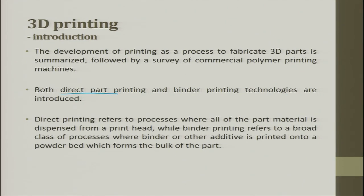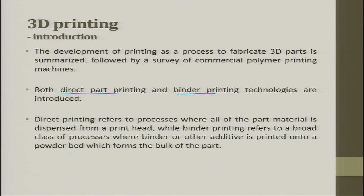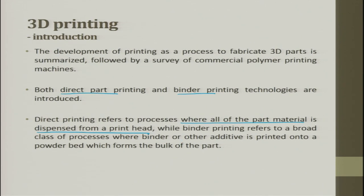Direct part means whatever you get will be the direct product. With binder printing, we try to bind the building materials and use that as a technology to develop a 3D product. Direct printing refers to processes where all the part material is dispensed from a printing head, while binder printing refers to a broad class of processes where a binder or other additive is printed. In binder printing, the building block is not dispensed — the binder is dispensed — through which we develop a 3D part.